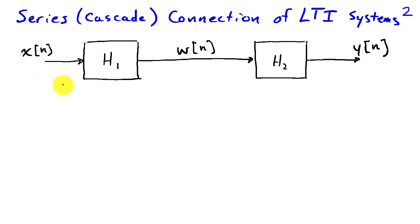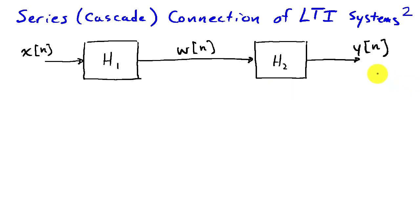In this picture we're depicting an input x of n coming into a filter or system h1, and the output of that is w of n, which is then applied to a filter or system h2 to produce a final output y of n. So these two systems h1 and h2 are connected in series or in cascade.